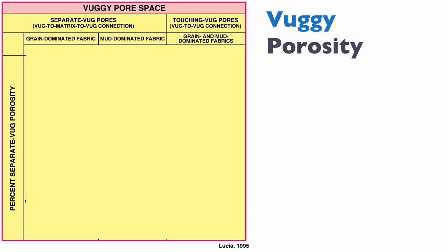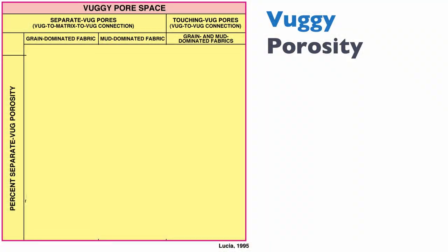For separate VOGS, he recognized that you can have either grain-dominated fabric, allowing better flow, or mud-dominated fabric, where flow must go through very fine-grained matrix. For touching vug pores, it doesn't really matter whether the fabric is grain or mud-dominated, because the flow goes through the vugs.